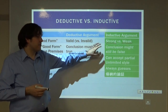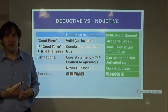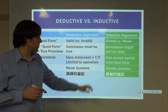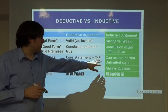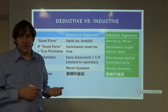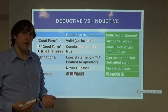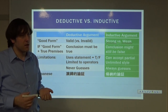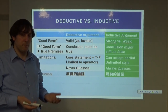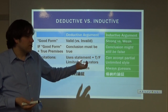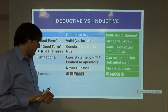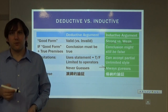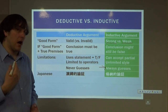In an inductive argument, no matter how good our premises are, no matter how good our ideas are, it is possible for the conclusion to still be false. Inductive arguments can accept partial values — so we can say someone is almost two meters tall, or that the average is 0.5. We can do all sorts of partial or fractional things. It's very free. It's always going to be a type of guess where we don't have a final answer.